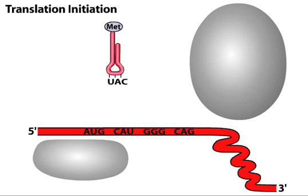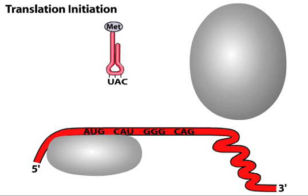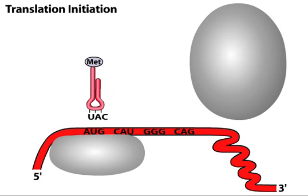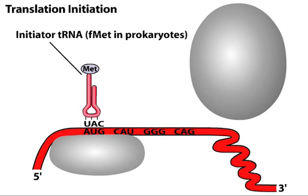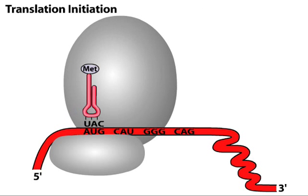In the first stage of translation, called translation initiation, a large and small ribosomal subunit, along with the initiating tRNA, assemble onto the mRNA.